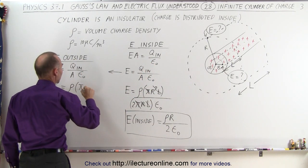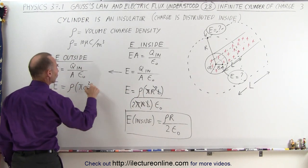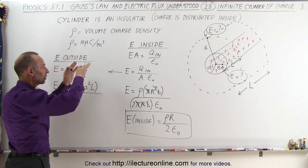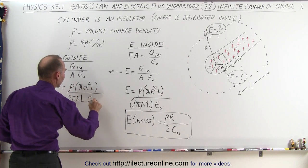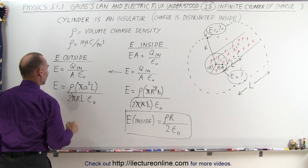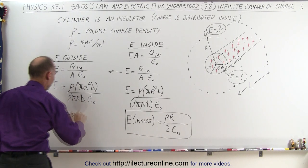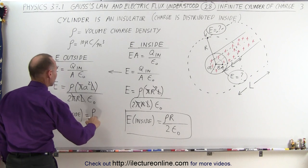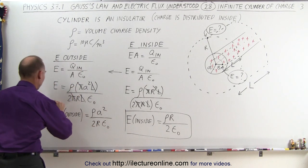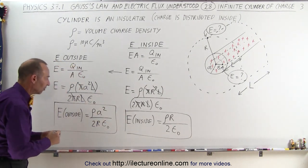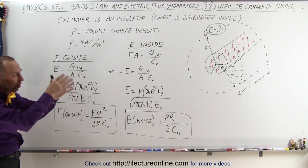So instead of pi r squared, we have pi A squared. In the denominator we have the area of the Gaussian surface: 2 pi r (the circumference) times the length L, times epsilon sub-naught. The pi's cancel and the L's cancel, but A squared and r do not. So the electric field on the outside equals the volume charge density times A squared divided by 2r epsilon sub-naught. That is the electric field magnitude outside a charged insulating cylinder that has charge distributed throughout its entire volume.